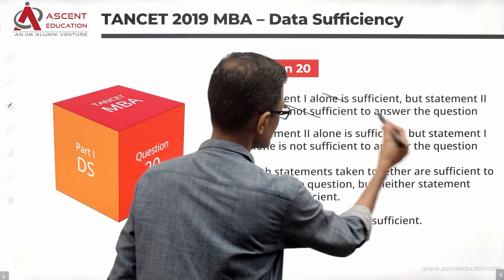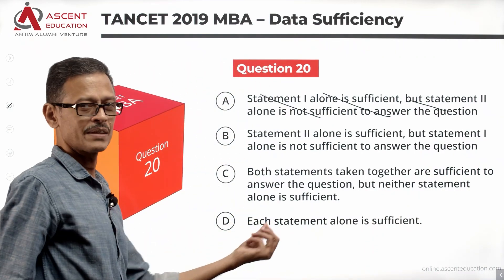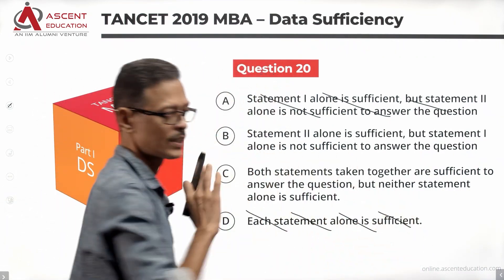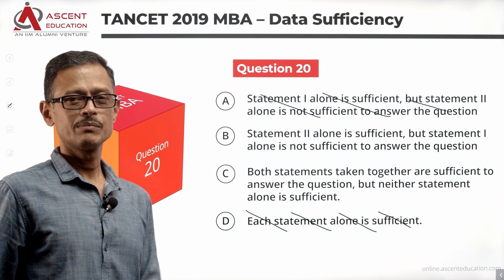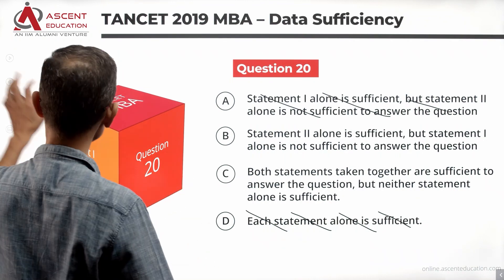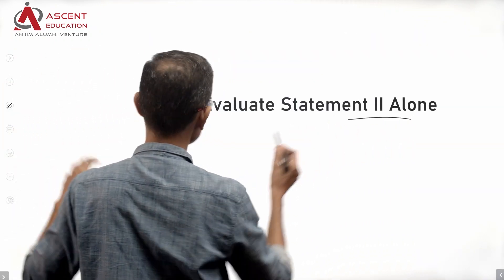Since Statement 1 alone is not sufficient, we can eliminate answer option A. Each statement alone being sufficient — answer option D — can also be eliminated. So we have eliminated two answer options, leaving a 50-50 chance.